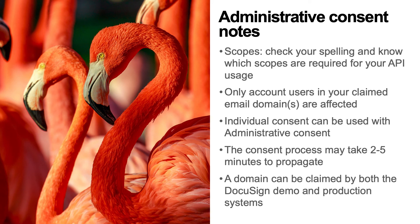Check which OAuth scopes your application requires. If you provide administrative consent for the wrong scopes, then your application will still receive the consent required error. Administrative consent only applies to account users whose email addresses use your claimed email domain. For example, if you have a user whose email address is a Gmail address, then you won't be able to provide administrative consent for them — they'll need to use individual consent. After using your organization's administration tool to provide administrative consent, DocuSign may take a couple of minutes to fully process and propagate the consent across its entire infrastructure. You can claim a domain for the DocuSign developer environment and claim it again for the production environment, but a domain cannot be claimed by two different production organizations.